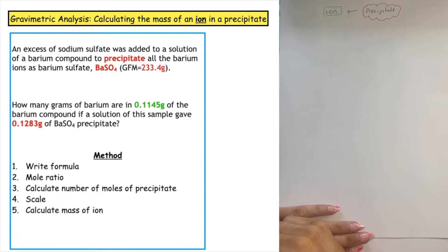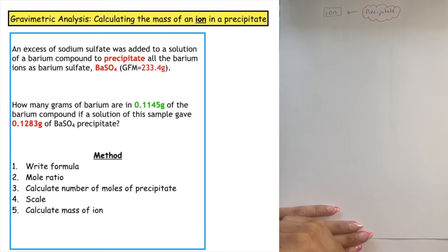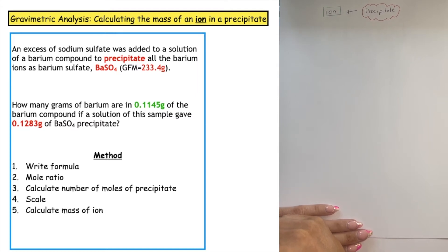In today's video we are going to be looking at gravimetric analysis and we are going to learn how to calculate the mass of an ion which is found in a precipitate.